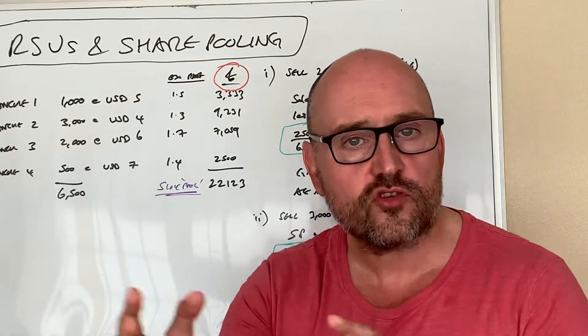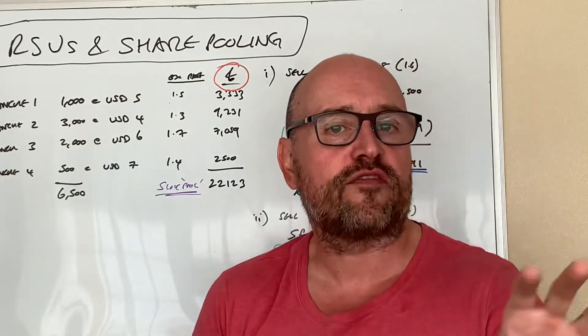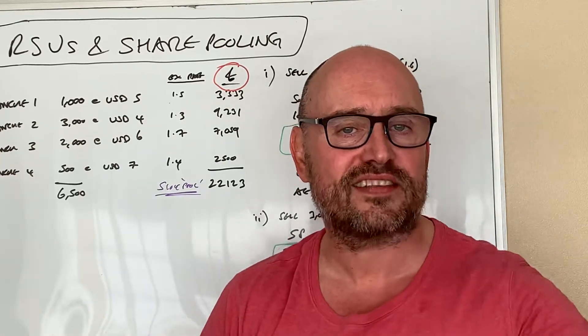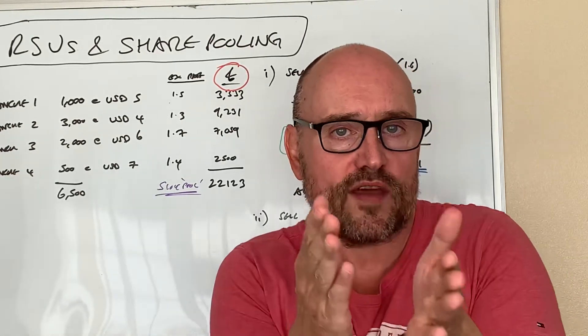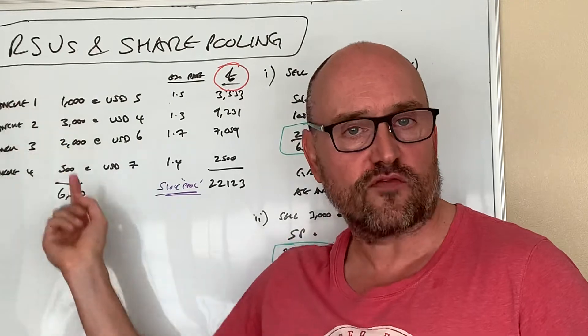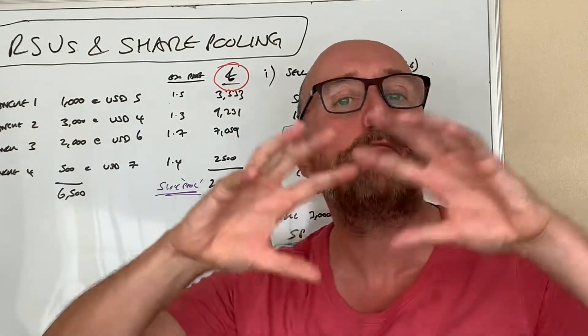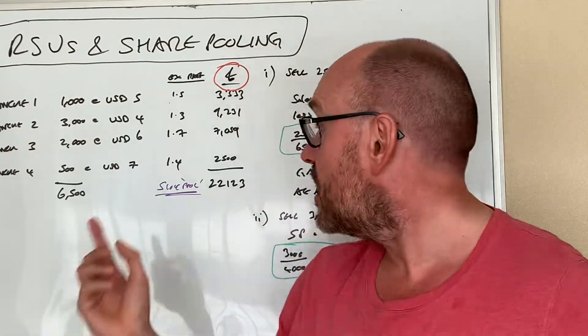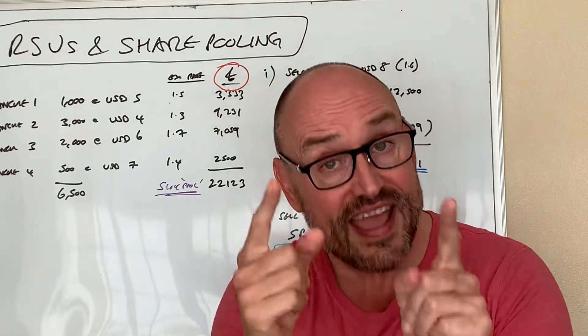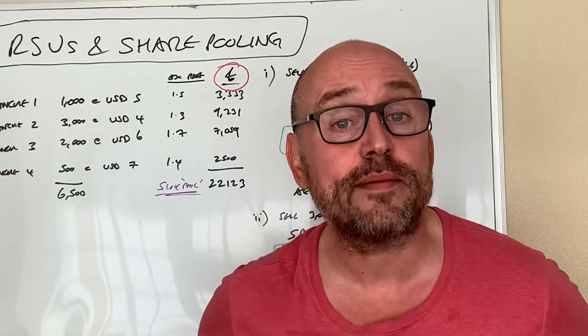So that whatever you sell first has to come from this or vice versa. He just says look, amalgamate the lot basically. This is called a share pool if it's the same share, the same company.